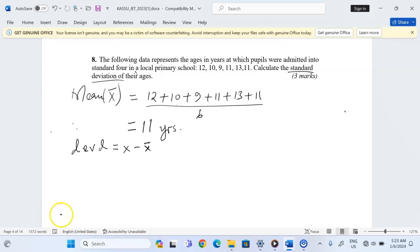When we take 12 minus the mean, we get 1. When we take 10 minus the mean, we get negative 1. When we take 9 minus the mean, I get negative 2.